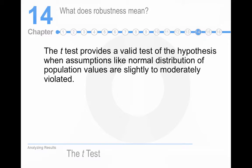What does robustness mean? The t provides a valid test of hypothesis when assumptions like normal distribution of the population values are slightly to moderately violated. This is because the peak of a t-distribution is flatter and the tails are more elongated than in a z-distribution. And so you have to go out further into an area of rejection.